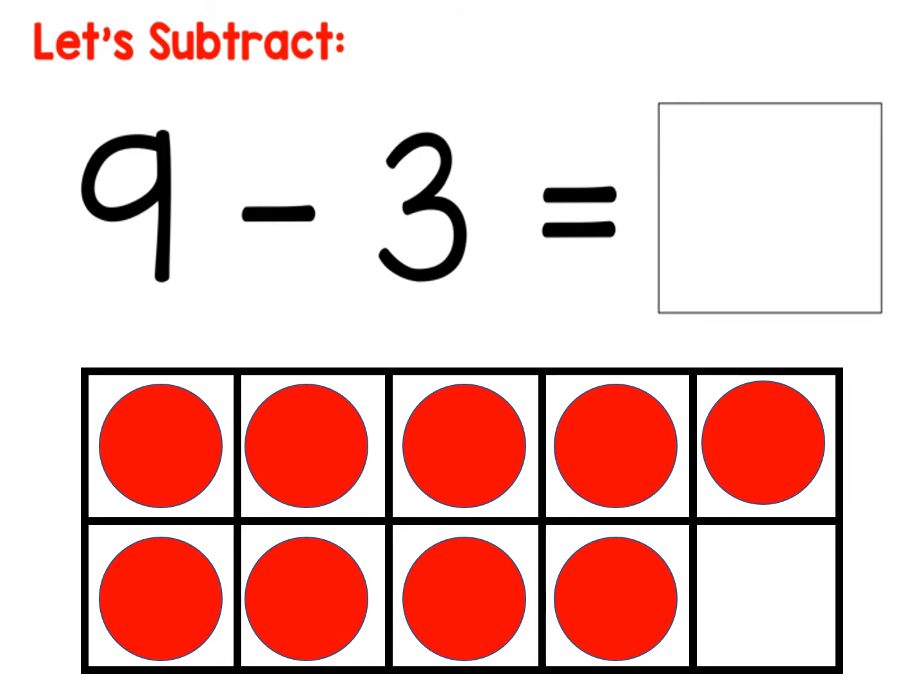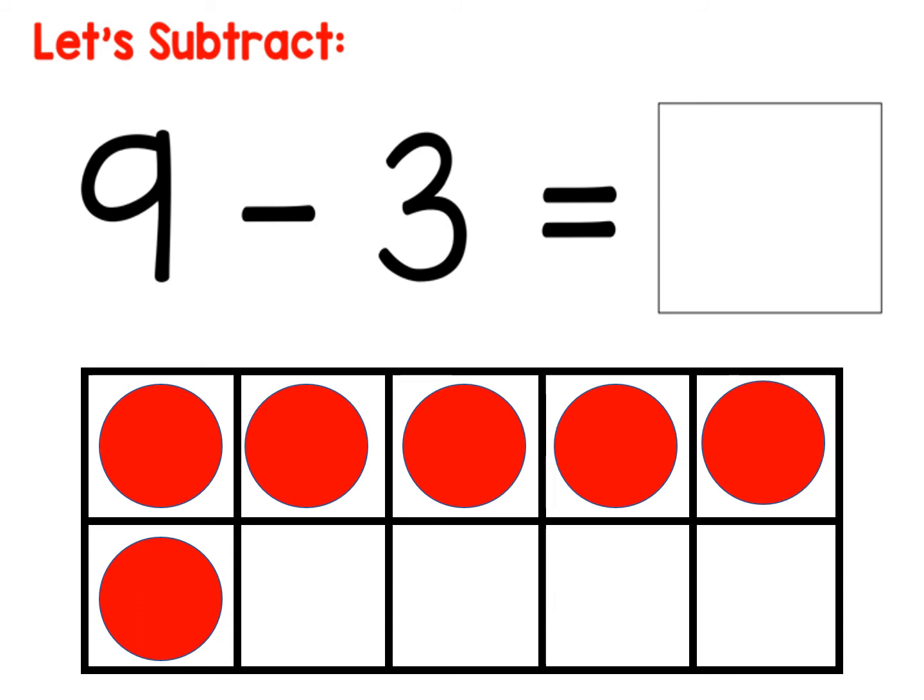It says minus three, so that's our subtrahend. Let's take away three. So I'm going to take away one, take away two, take away three. And then we would want to count how many are left. What's the difference? One, two, three, four, five, six. So the difference is six. Great job.